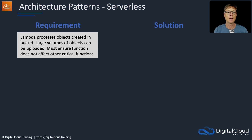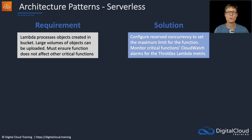Lambda processes objects created in a bucket, large volumes can be uploaded, and you need to ensure that the function doesn't affect other critical functions. If there are bursts of objects, you don't want this Lambda function taking resources that critical functions need. Simply configure reserved concurrency — that sets the maximum limit for the function and ensures other functions can't use that concurrency either. You can then monitor critical functions with CloudWatch alarms for the throttles Lambda metric to see if any functions are throttling.